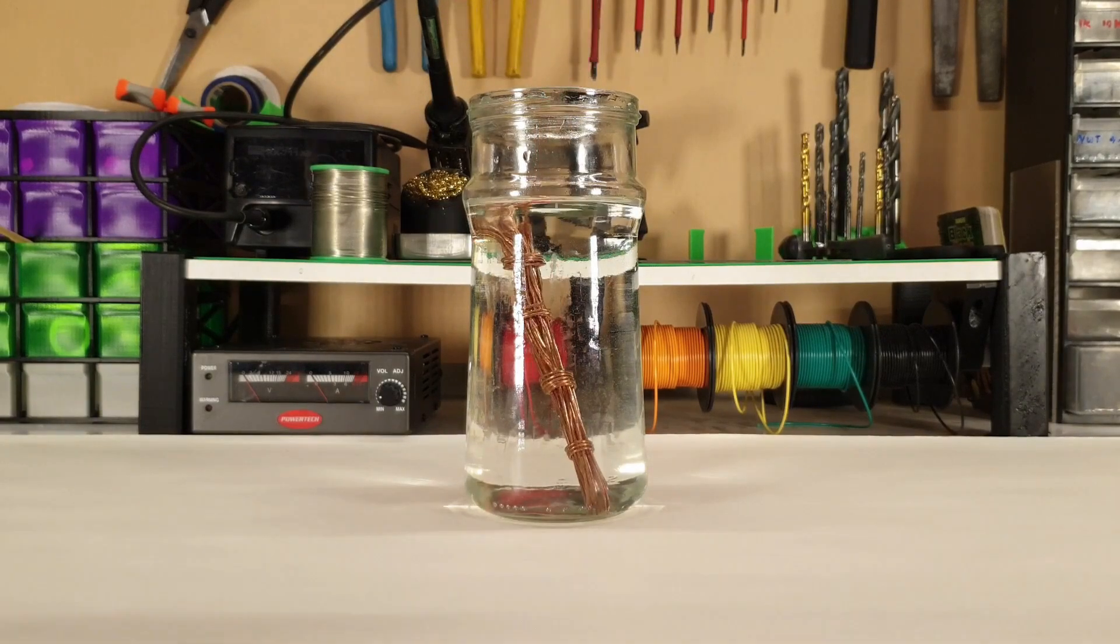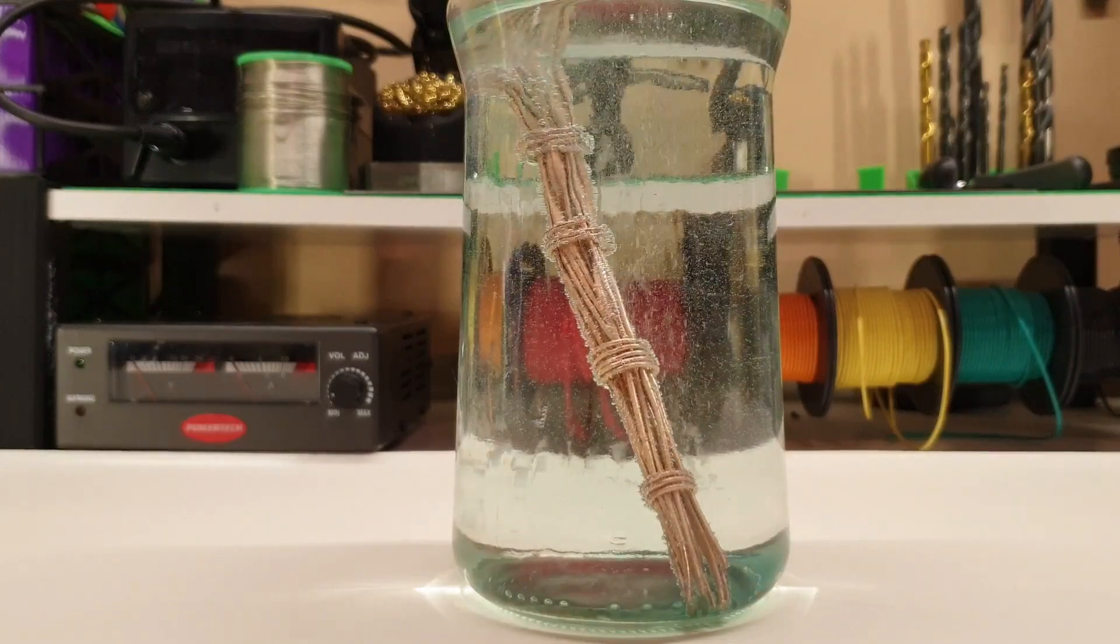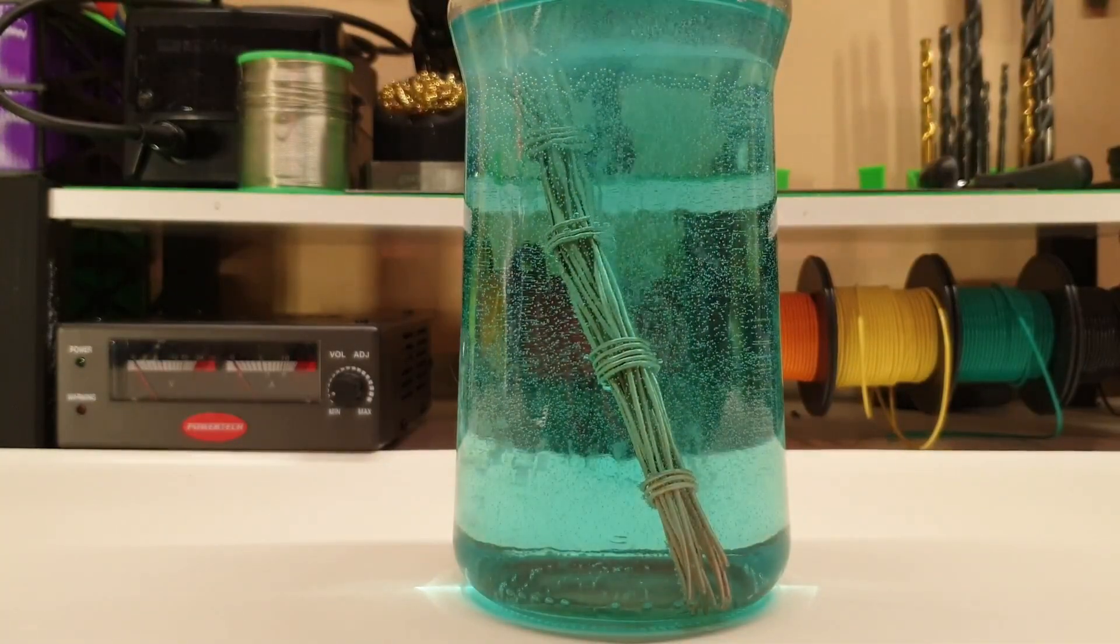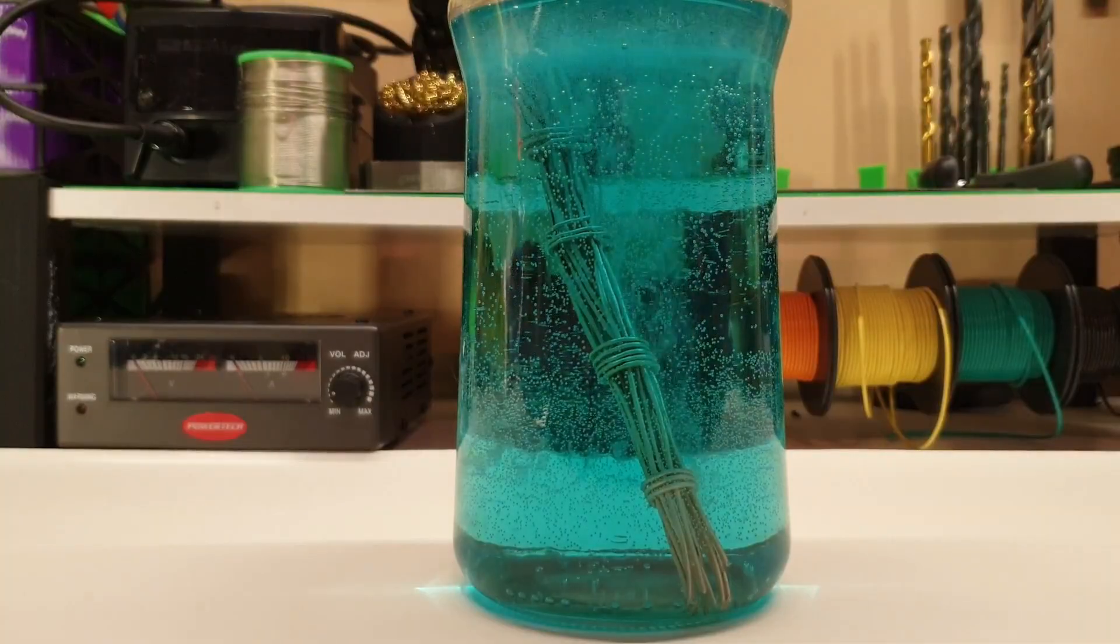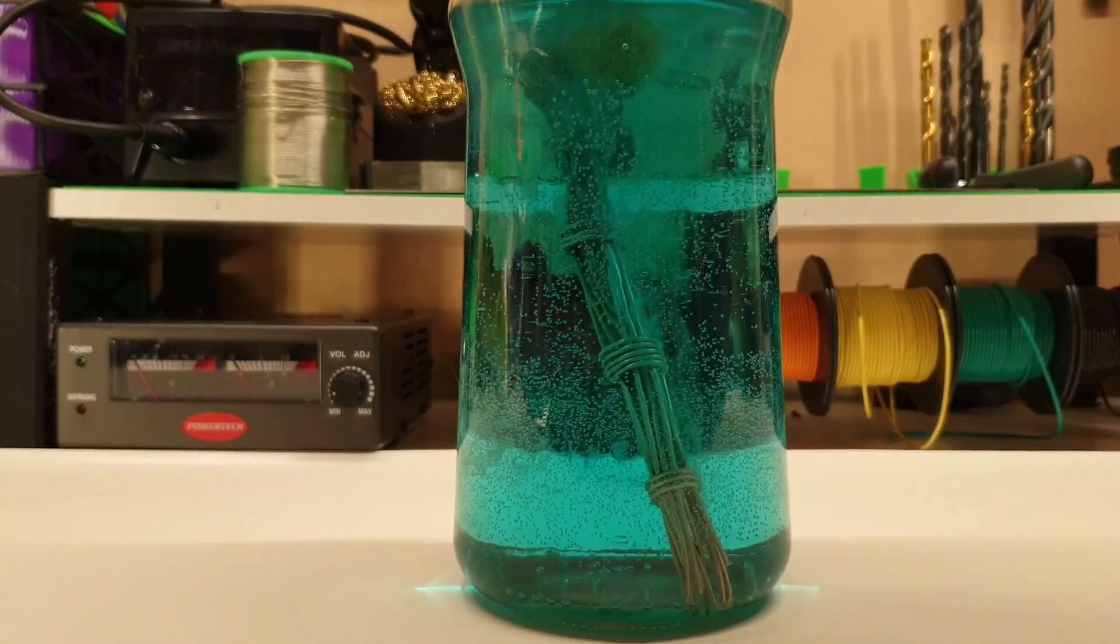We then add our scrap copper to it and leave it for at least a few hours. The acetic acid in the vinegar reacts with the copper, and it creates copper acetate, which is why the mixture is turning blue. I generally leave this overnight to fully react, but a few hours is generally long enough.